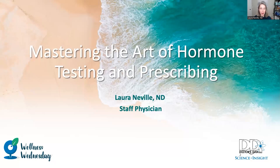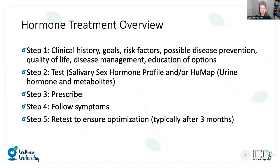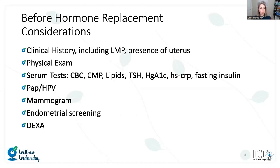Today's webinar will help you get to that point. I'm going to focus on reading hormone profiles and treating based on that data. I'll mostly be speaking about salivary testing, which I'll explain the reasoning behind as we go. As an overview, we've got a few different steps to follow: gather the clinical history and goals, risk factors, possible disease prevention areas, quality of life, disease management, and educate our patients on all of their options. Then we're going to be testing, then prescribing following their symptoms, and retesting to ensure we've got them in that optimal place.